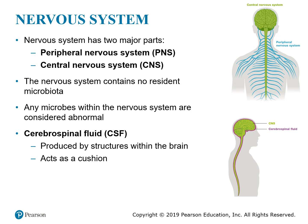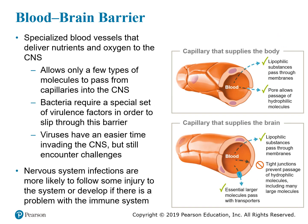The nervous system contains no normal microorganisms, so anything found within the central nervous system is considered abnormal. Within the central nervous system, you have spinal fluid that acts as a cushion around the brain and the spinal cord, making it an area at risk for infection. The blood-brain barrier is a unique system of specialized blood vessels that exchange nutrients and oxygen to the central nervous system, but it also prevents organisms from entering the sterile environment, although some virulence factors allow bacteria to cross this barrier.